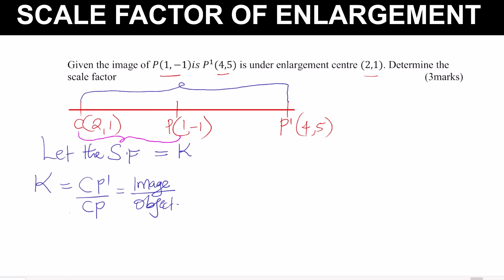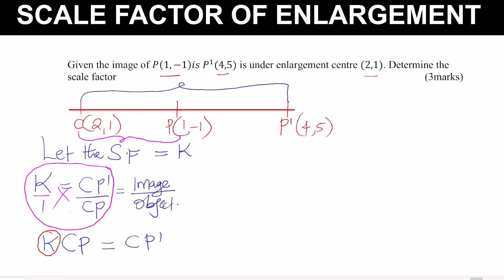Using this formula, we can get the scale factor of enlargement. If we write k/1 = CP'/CP and cross-multiply, we get k × CP = CP'. What we are interested in is k, the scale factor of enlargement.